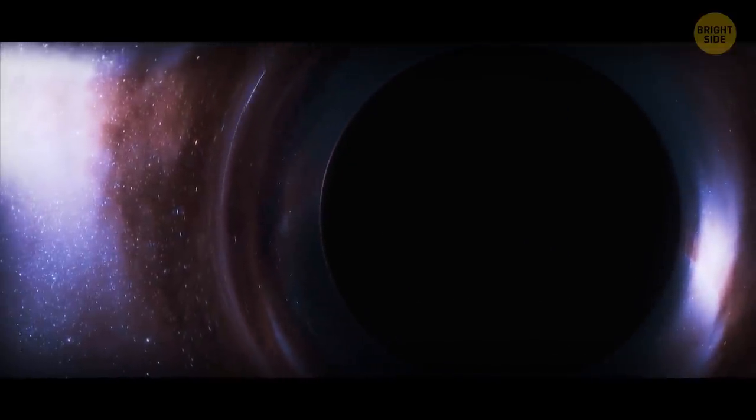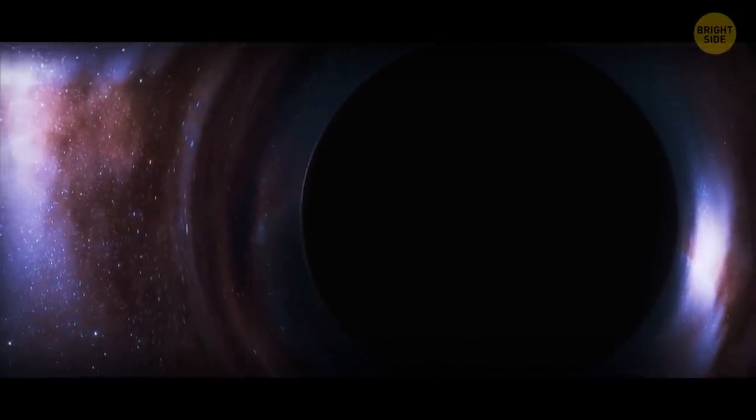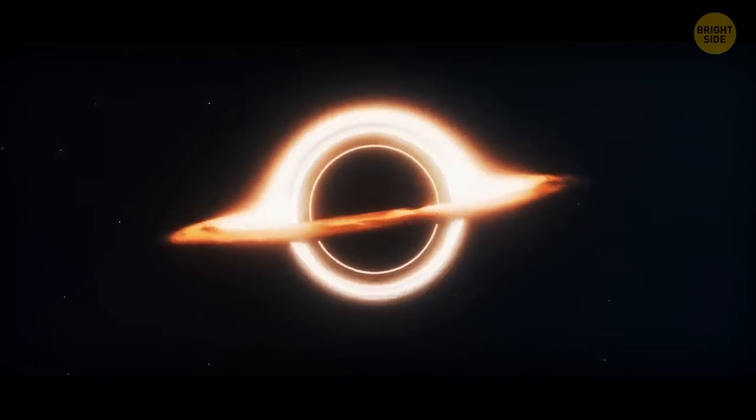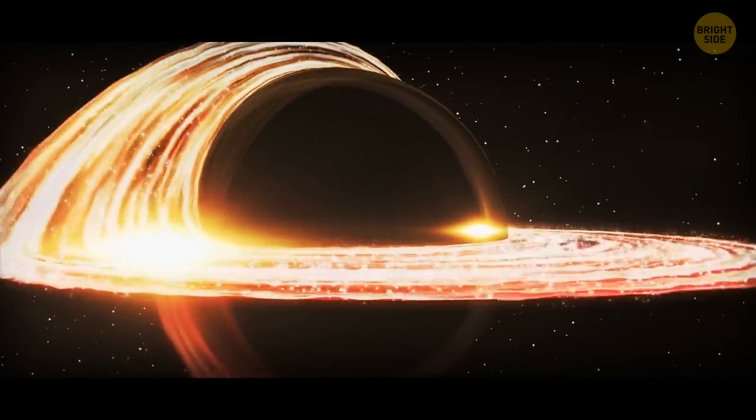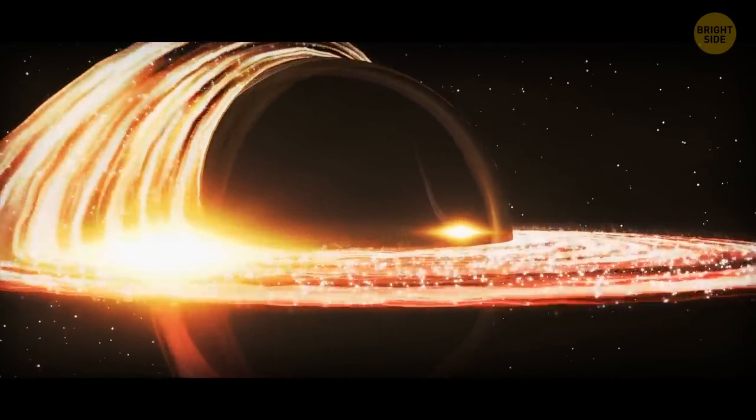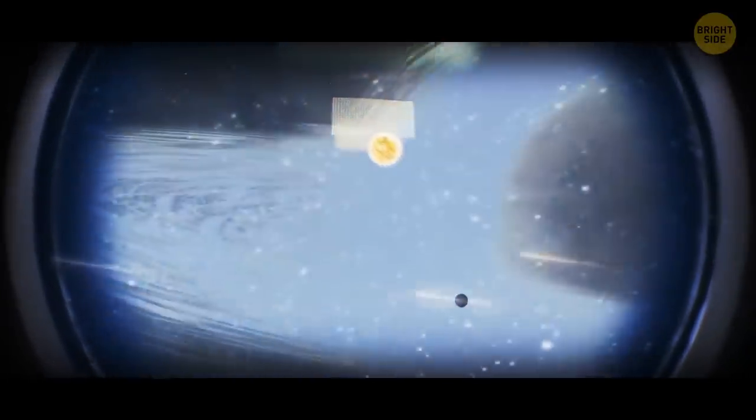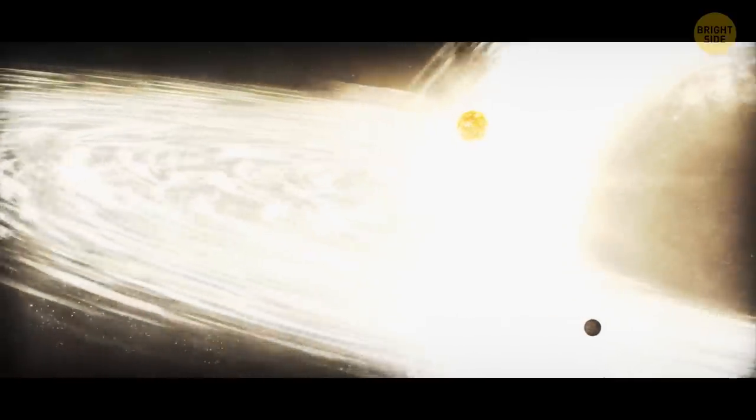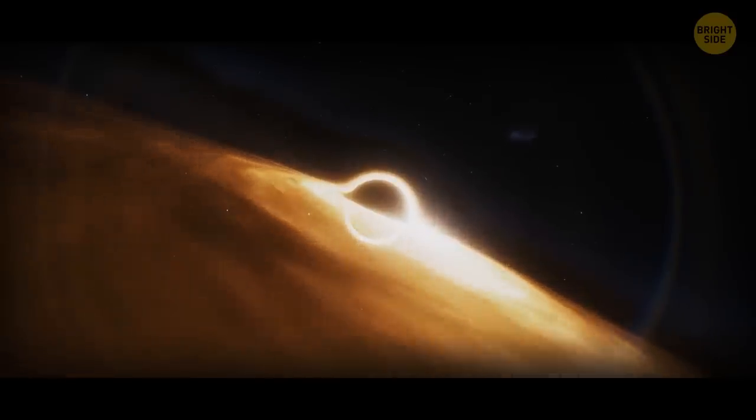This made me wonder how large the biggest black holes are. There are four types of black holes: stellar, intermediate, supermassive, and miniature. Naturally, the biggest ones fall into the category of supermassive. The largest black hole in the universe we've discovered so far is about 66 billion times larger than the sun. It's one of the brightest objects in the universe.